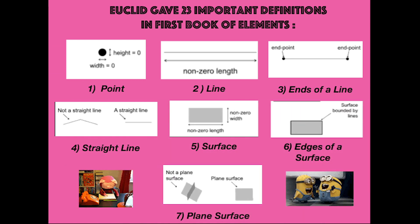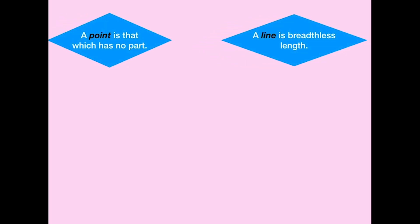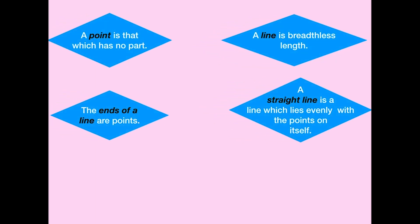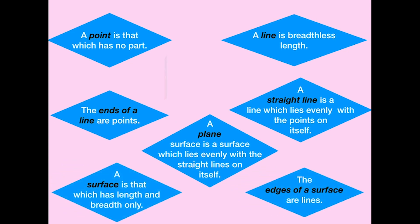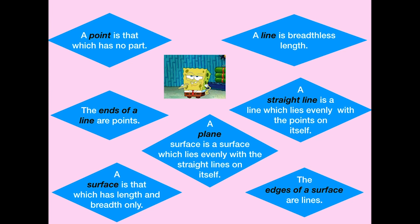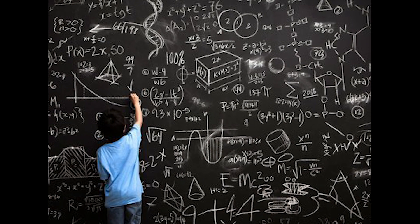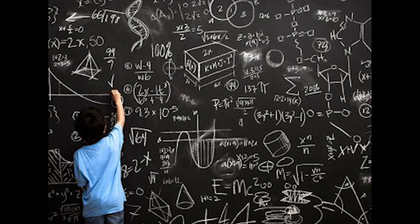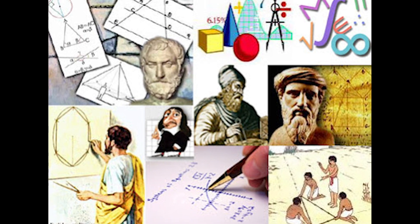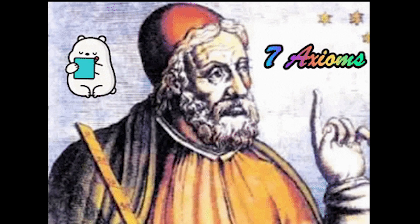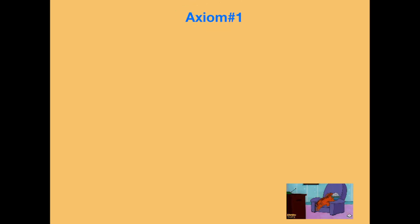In these definitions, you will notice that many terms like part, breadth, and length need to be further defined. So to explain one thing, you have to explain so many other things. Mathematicians therefore agreed on some undefined terms. Euclid gave such undefined terms and he also gave seven axioms. Now let us try to understand Euclid's axioms.